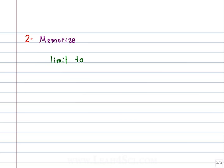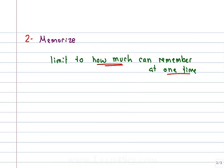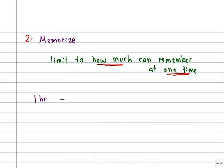When it comes to memorizing information, there is a limit to how much your brain can take in at once. The key is how much you can remember at one time. So how do we overcome that limit? We find a way to reduce the how much, and we find a way to reduce the one time. If you're trying to memorize so much by cramming for an hour, your brain hits that ceiling. Take that one hour and break it up throughout the day.